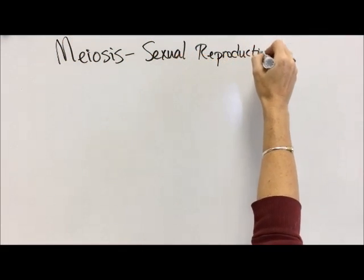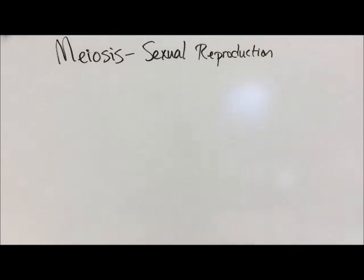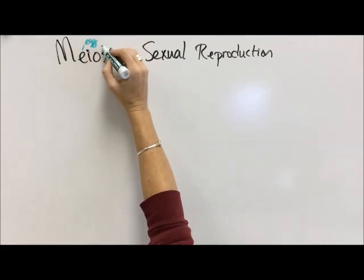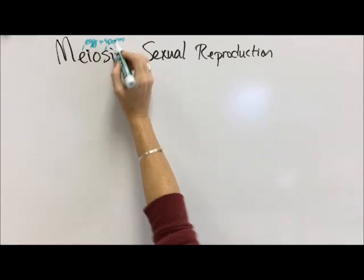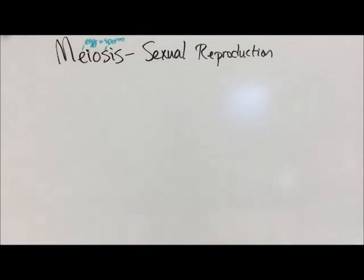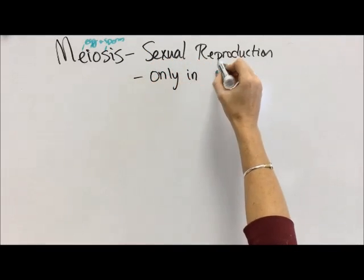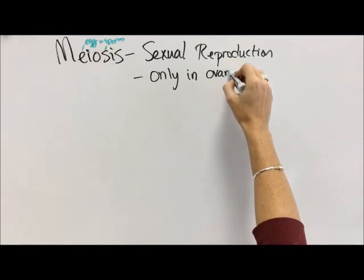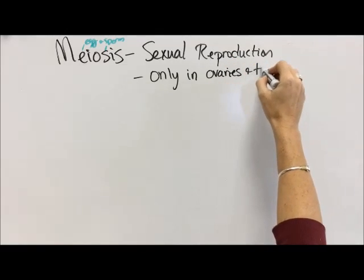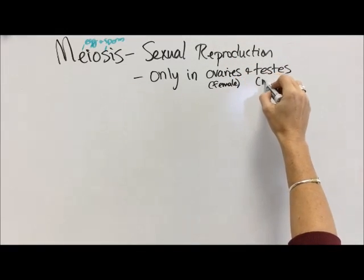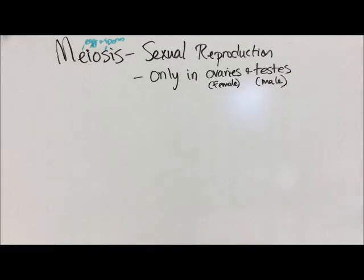Meiosis is the type of cell division that is done for sexual reproduction. I like to think of meiosis as E for eggs and S for sperm. So meiosis makes eggs and sperm, whereas mitosis heals your toe. Meiosis only happens in the ovaries and the testes — ovaries in females, testes in males.